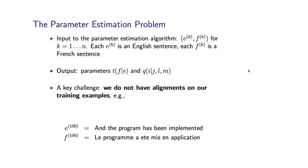Here is a definition of the parameter estimation problem. As input to the parameter estimation algorithm, we assume a set of sentence pairs. I'm going to use E_k F_k to refer to our kth training example. That example consists of an English sentence — for example, 'the dog' — and a French sentence, which is assumed to be a translation of the English sentence. As output from the model, we want parameters of the form T(f|e) or Q(i|j,l,m).